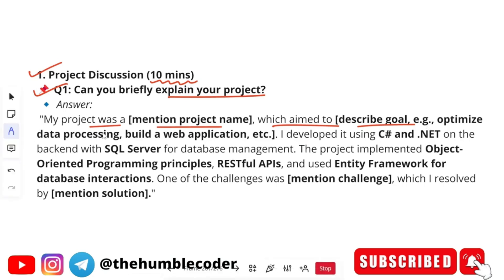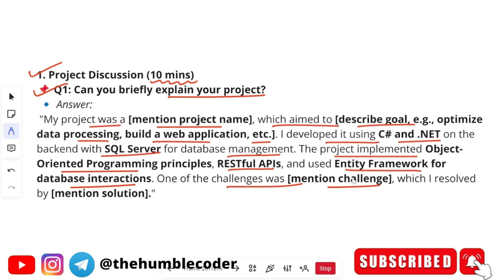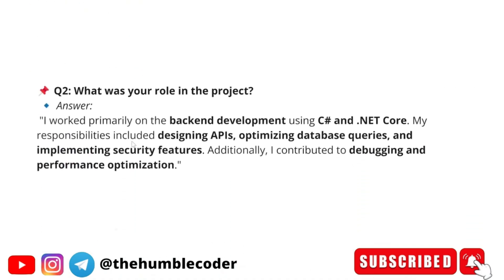Every project should have a goal — what purpose it is serving, whether it's a business site, e-commerce site, etc. For example: 'I developed it using C# and .NET on the back end with SQL Server for database management. The project implemented object-oriented programming principles, RESTful APIs, and used Entity Framework for database interactions. One of the challenges was [mention your challenge] and how you resolved it.'